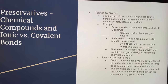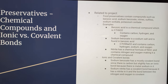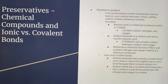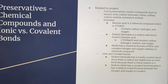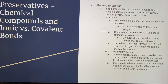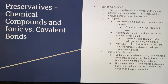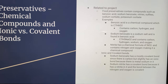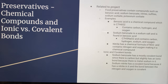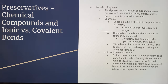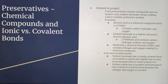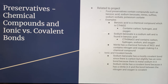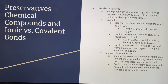Nitrite has a chemical formula of NO2⁻ and contains nitrogen and oxygen, making it a chemical compound. Regarding ionic versus covalent bonds: sodium benzoate has a mostly covalent bond since it contains carbon, but it also has some ionic character because of the metal sodium, which is not as strong as the carbon component. Sodium nitrite has a covalent bond because of the nitride, and the bond between nitrogen and oxygen within it is covalent.